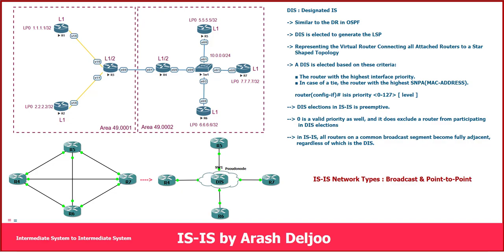In this video I'm going to talk about the ISIS network types: broadcast and point-to-point. In previous videos we configured point-to-point interfaces in ISIS, learned how to configure serial interfaces with the point-to-point ISIS network type, how to establish neighborship, and what the neighborship conditions are. In this video our focus is on broadcast networks - the next network type in ISIS. In ISIS natively we have only two network types: point-to-point and broadcast.